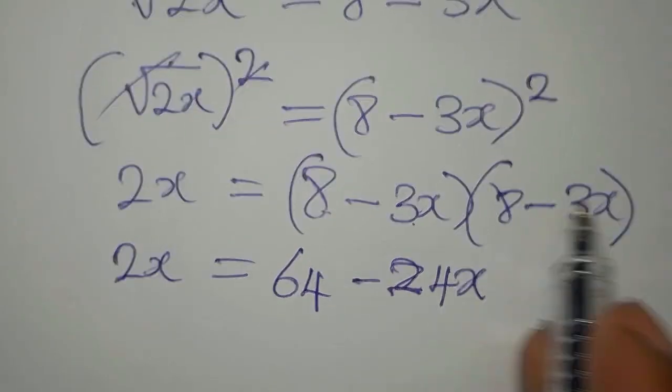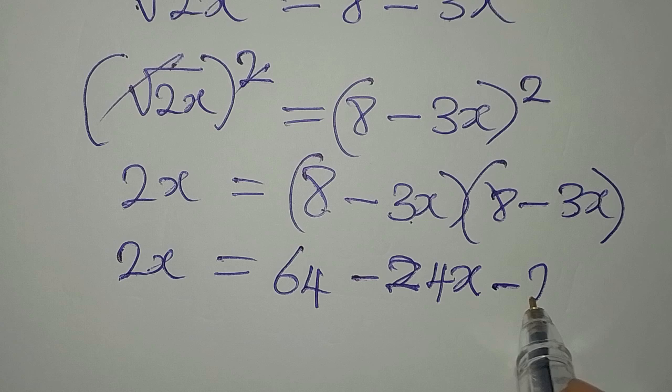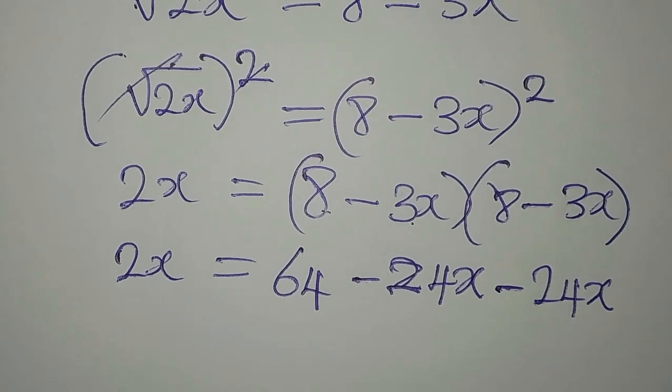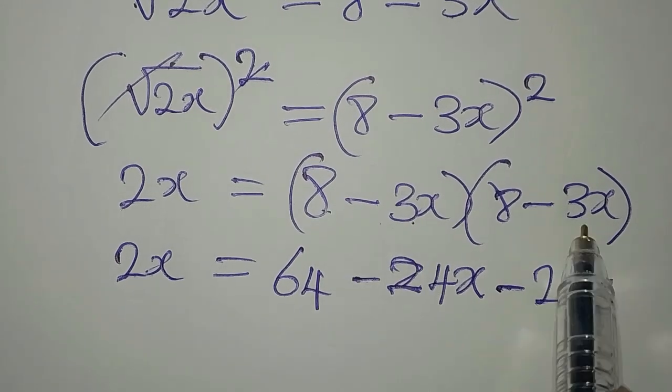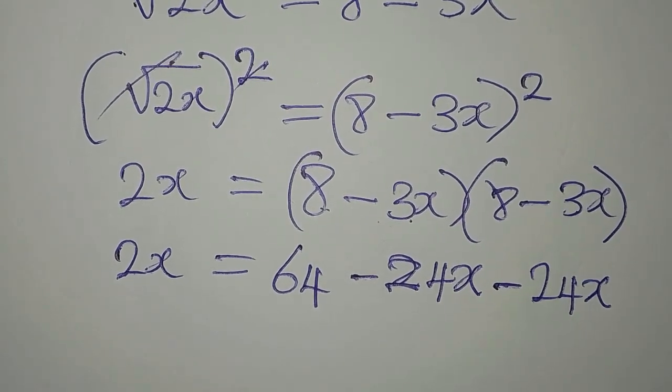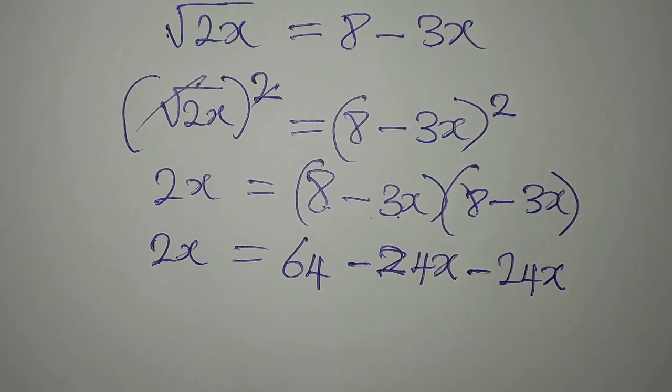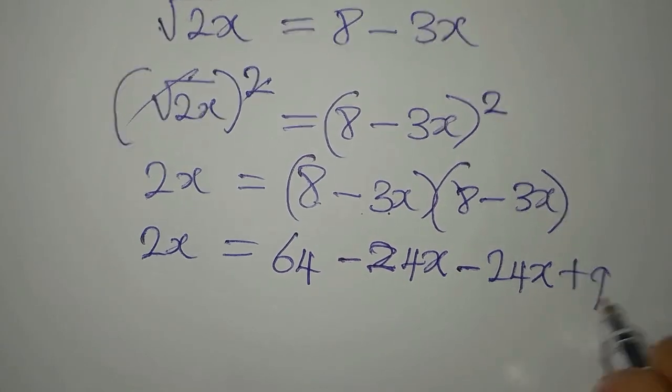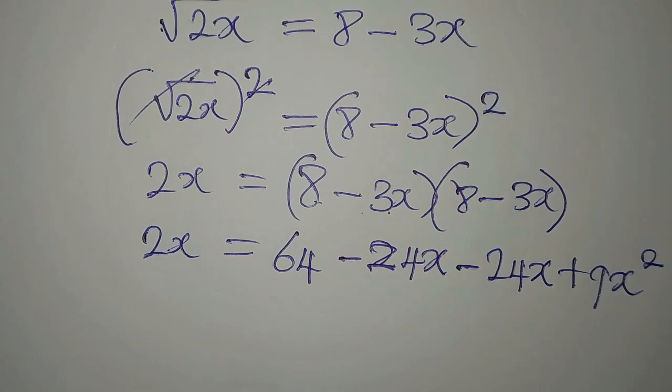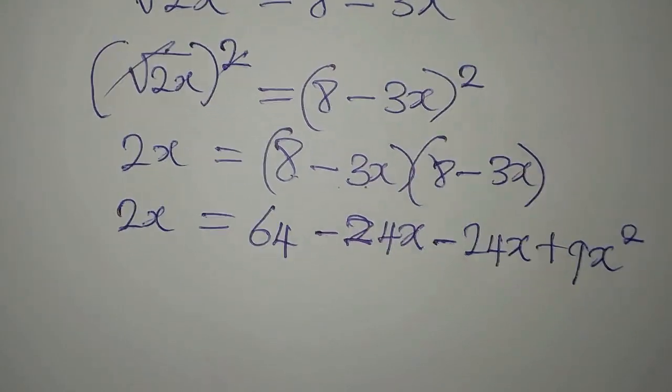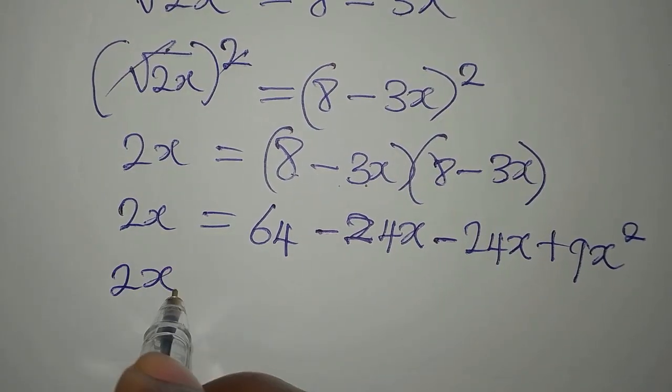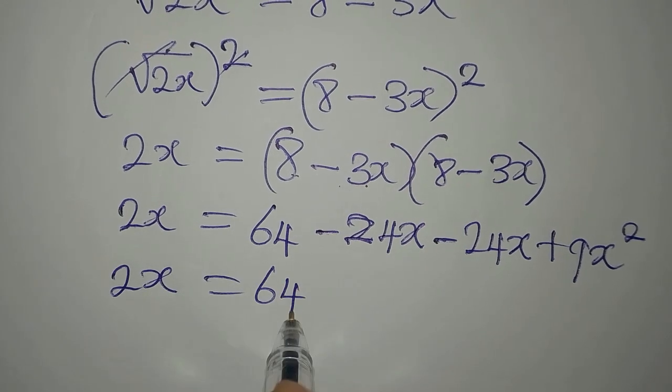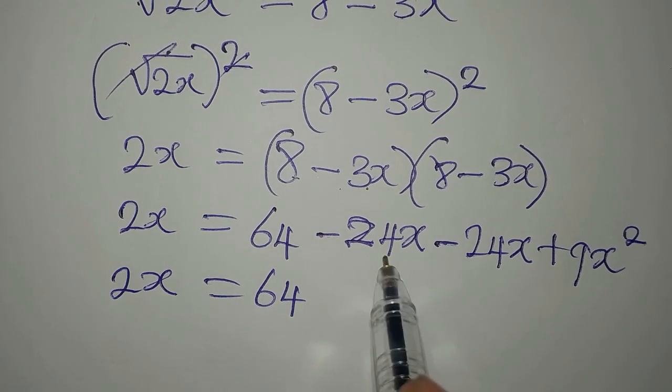Then this times this gives us another negative 24x. Then negative 3x times negative 3x gives us positive 9x squared. So this is 2x equals 64 minus 24x minus 24x, which is minus 48x, plus 9x squared.